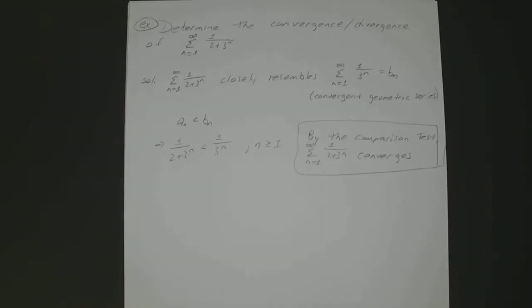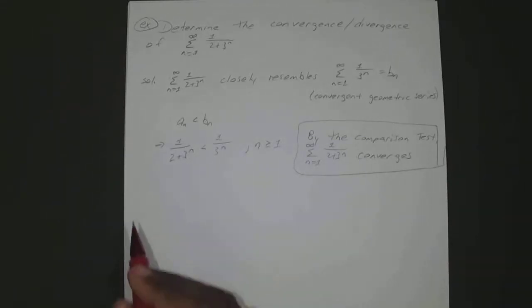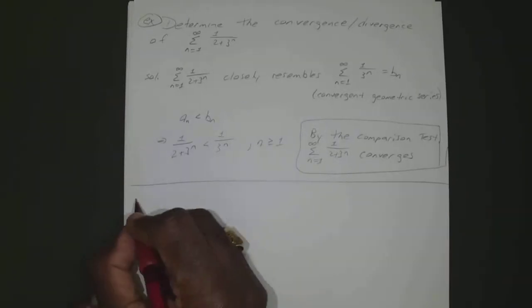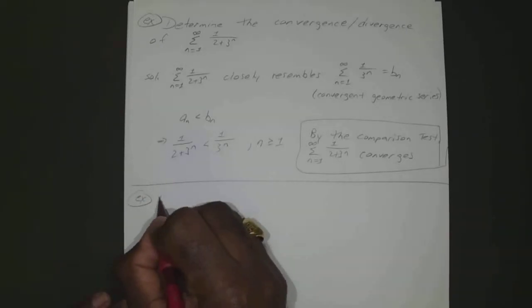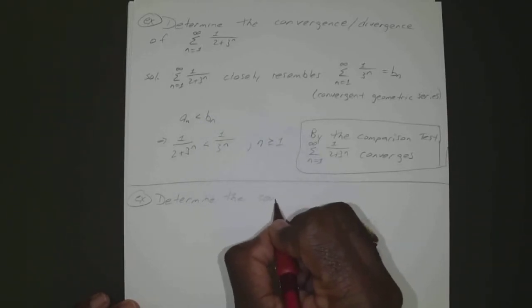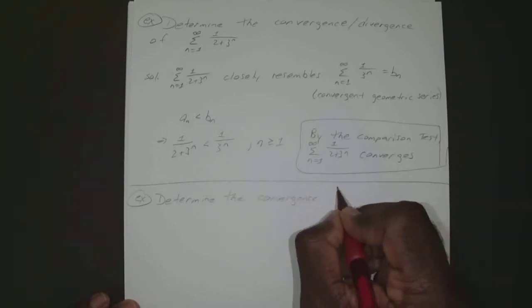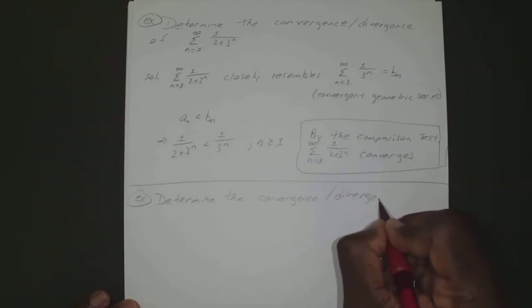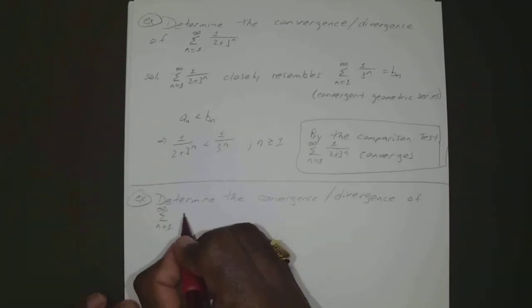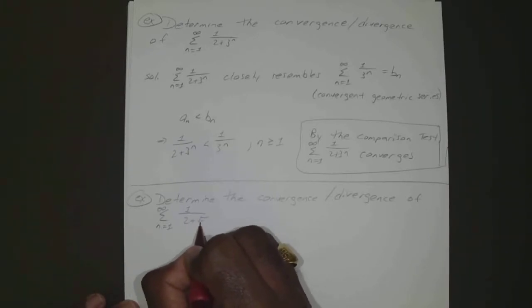So we didn't even have to bother with that — we just had to find one series to compare it to. Now let's determine the convergence or divergence of the sum from n equals 1 to infinity of 1 over 2 plus square root of n.